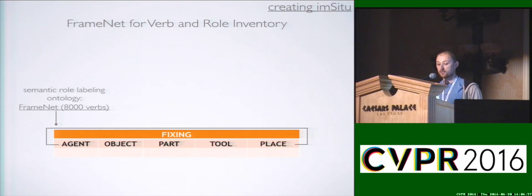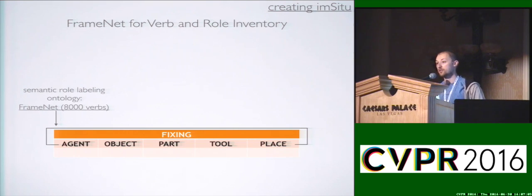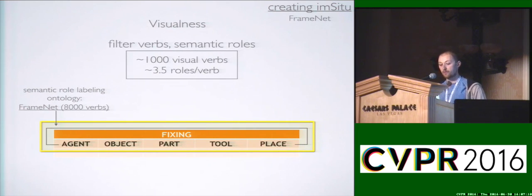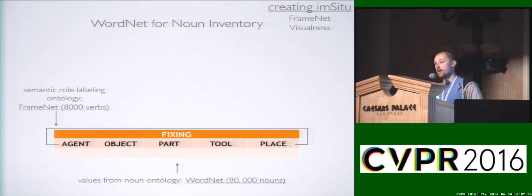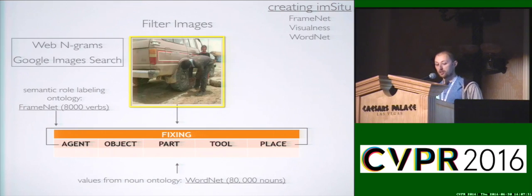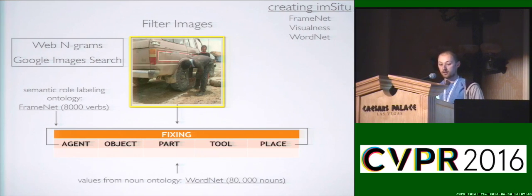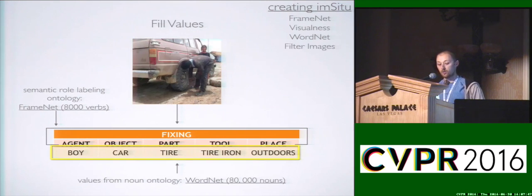The basic idea is to use a semantic role labeling ontology to scaffold our large-scale dataset. We start by using an ontology called FrameNet, which contains 8,000 verbs, and we filter it for visualness, leaving about 1,000 visual verbs. We also filter the roles for visualness. Unlike in sentences, we don't have words to fill role slots, so instead we draw from the noun ontology WordNet, which has 80,000 noun categories. To build our image collection, we query Google using n-grams mined from verbs, then have Turkers select whether an image corresponds to a particular activity, and finally have them fill role categories from WordNet.